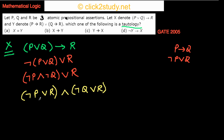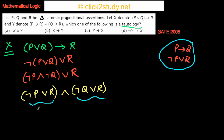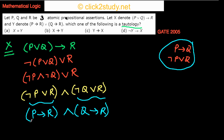Applying the identity again to each part — not P or R becomes P implies R, and not Q or R becomes Q implies R. So X simplifies to: (P implies R) and (Q implies R).